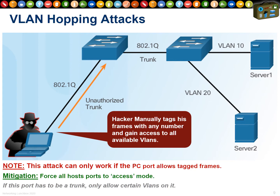VLAN hopping attacks happen when a user plugs into a switch port that's allowed to become a trunk. They can run software to say 'this is now a trunk port,' and once it's a trunk, all VLANs are accessible via tagging. Simple mitigation: force all ports to access mode. When a laptop requests to become a trunk, the port says no — and any tagged traffic is completely ignored.